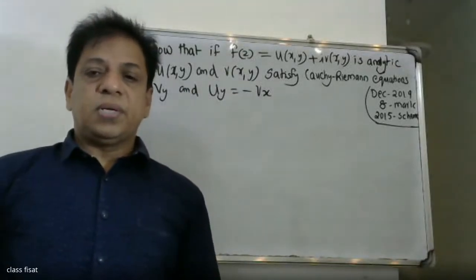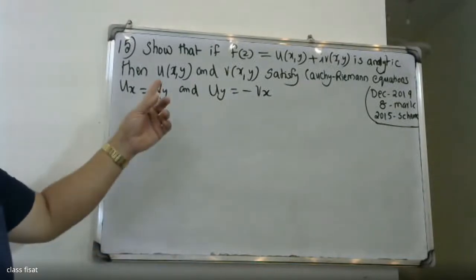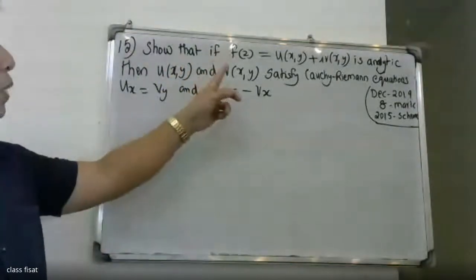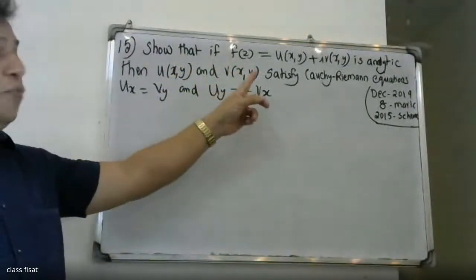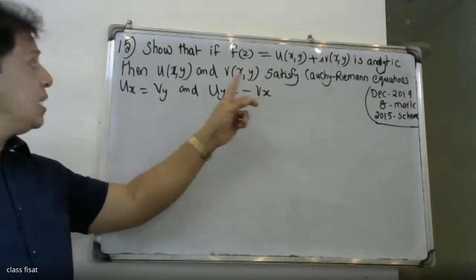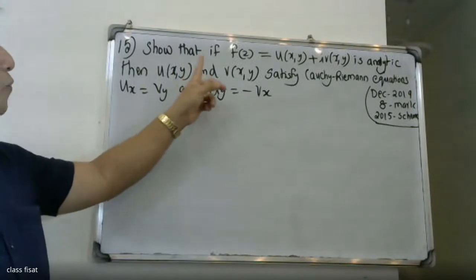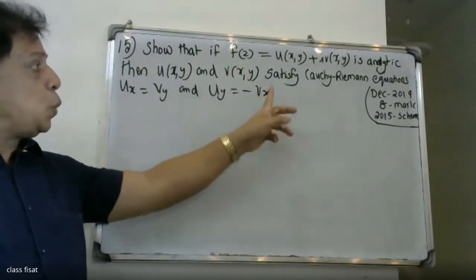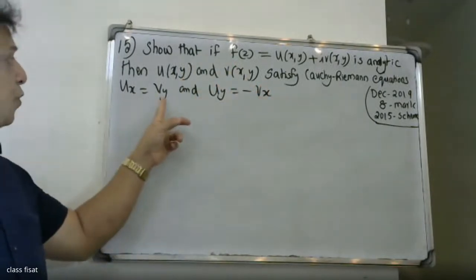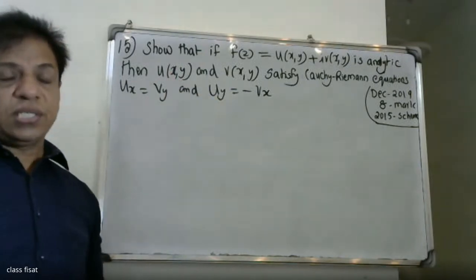Good morning students. Show that if f(z) is equal to u(x,y) plus i·v(x,y) is analytic, then u(x,y) and v(x,y) satisfy the partial differential equations u_x equal to v_y and u_y equal to minus v_x.